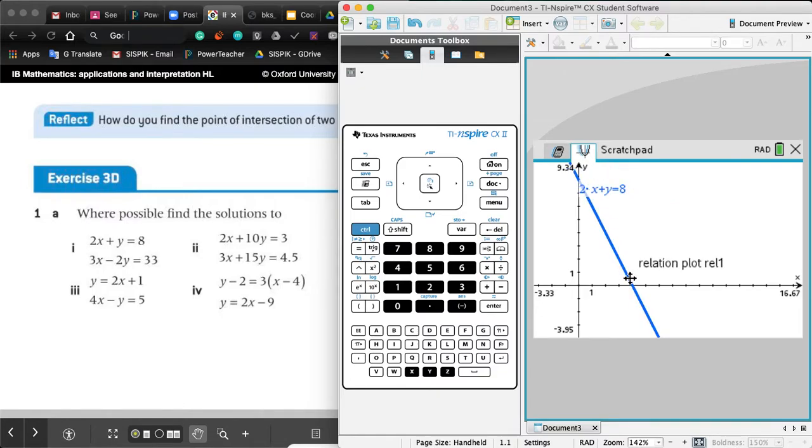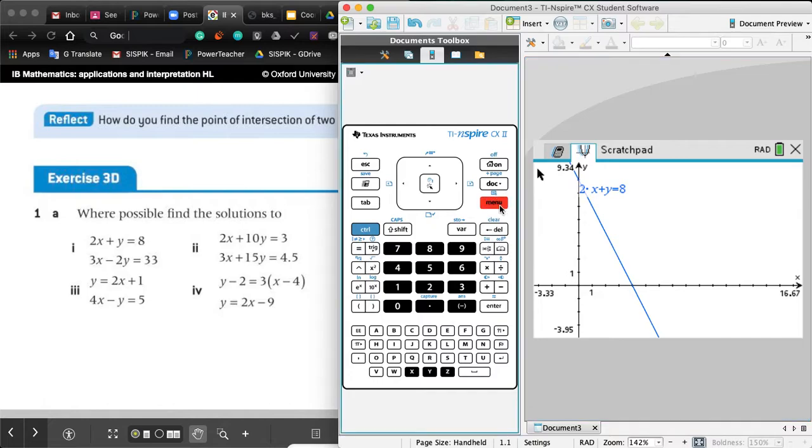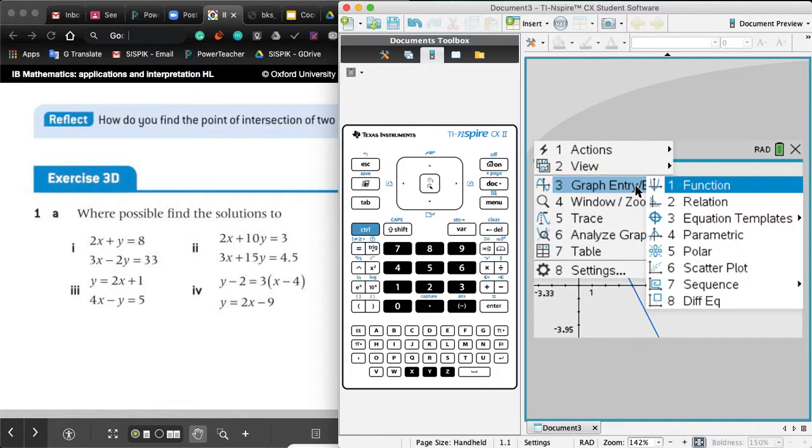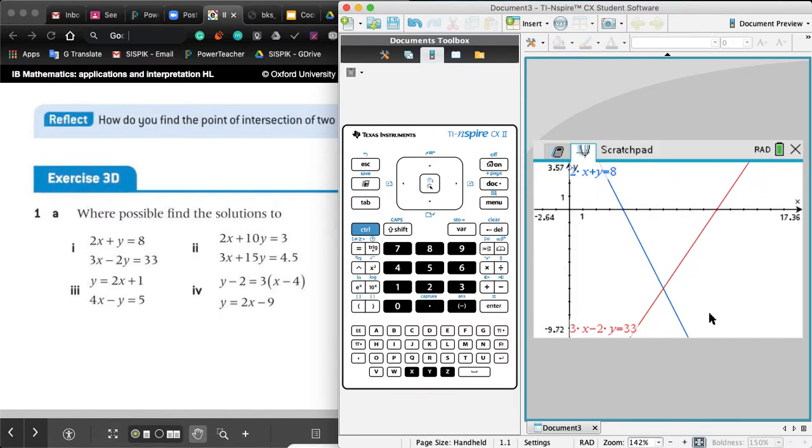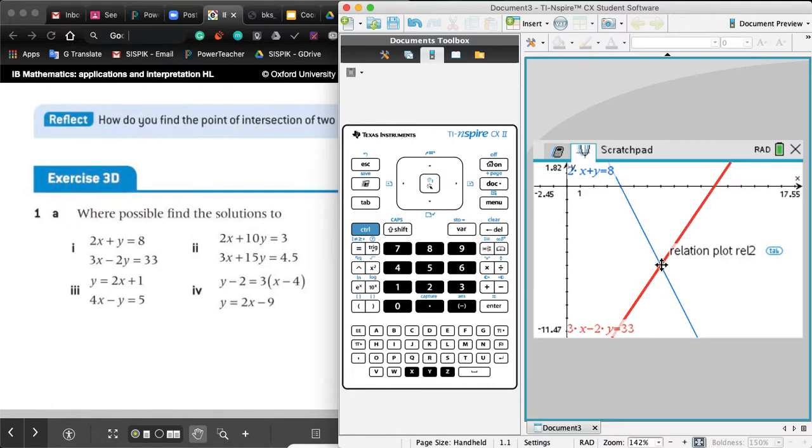For the next equation, you can go here or double-click. Now insert 3x - 2y = 33. You have two lines and the intersection is here, but we cannot just read it, so we need to find a tool to get the intersection.